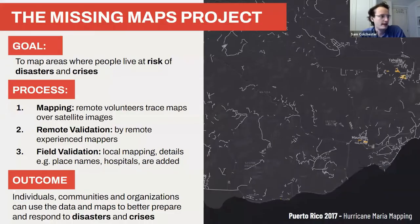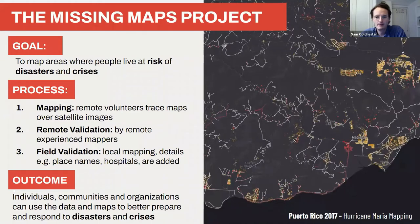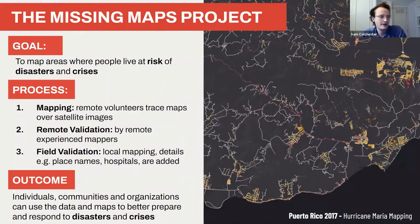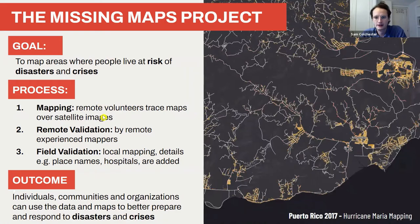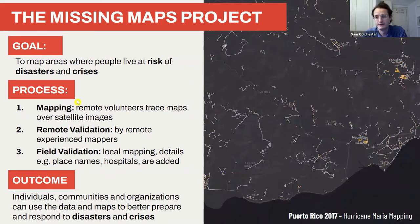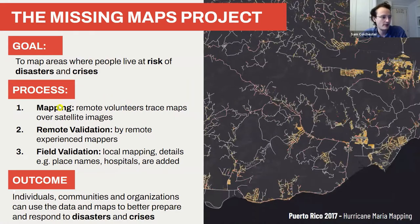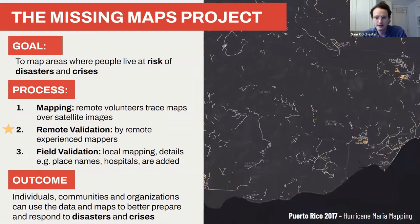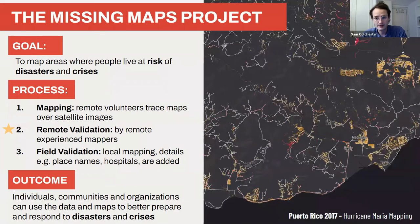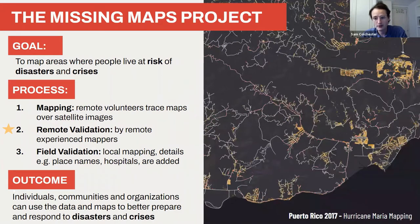Just to give you an idea of the entire Missing Maps process: the first step involves remote mappers looking closely at satellite imagery and tracing features like buildings on top of it. I'll show you that in a few minutes. The second step, which I'm talking about today, is remote validation — where more experienced mappers review the work done by the initial mappers.